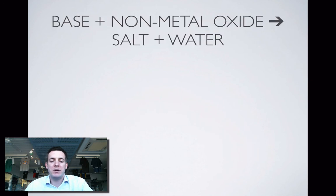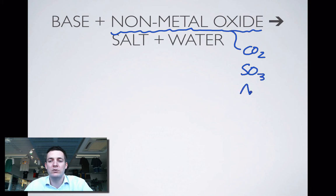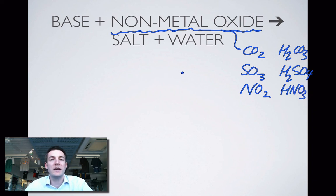And finally, base plus non-metal oxide. Now, some people approach this as if it's a totally new type of reaction that they haven't seen before, but perhaps if you can treat the non-metal oxide as being like some kind of acid that you already know, then maybe this will be a little bit easier for you. Here are some non-metal oxides: carbon dioxide is like carbonic acid, sulfur trioxide is like sulfuric acid, and nitrogen dioxide is like nitric acid.